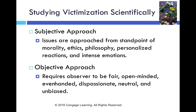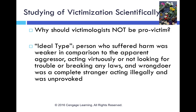When studying victimization we look at it empirically, meaning scientifically. We could take a subjective approach — responding emotionally or from a personal point of view — but when we study something scientifically, we want to be objective: fair, open-minded, even-handed, dispassionate, neutral, and unbiased. This can be more difficult when talking about victims. Being objective means we don't really advocate for one side or another.